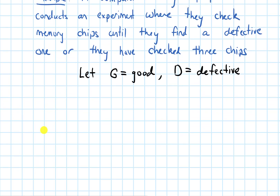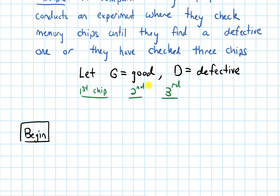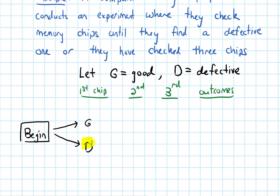Now let's draw a tree diagram. We begin, and potentially we check a first chip, a second one, and up to a third one. After the third one, we write out our outcomes. When we check the first chip, either it's good (G) or defective (D). If it's defective, we stop — I'll highlight those stopping points. If it's good, we keep going to the second chip, which is again either good or defective.